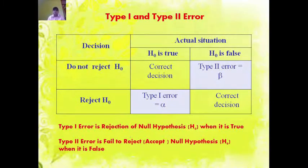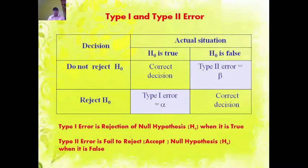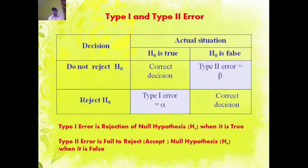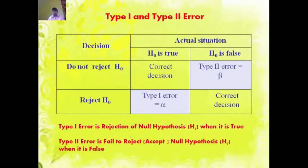Type 1 and Type 2 error. Type 1 error occurs when we reject the null hypothesis when it is actually true. When we fail to reject the false null hypothesis, this is known as Type 2 error.